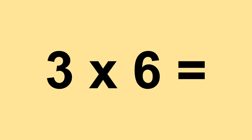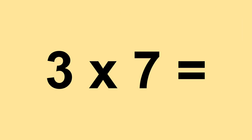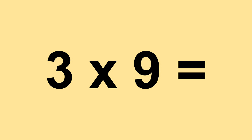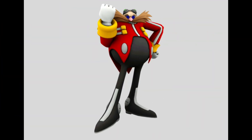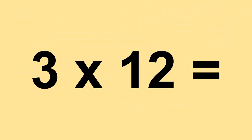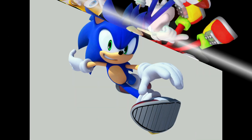Three times six equals eighteen. Three times seven equals twenty-one. Three times eight equals twenty-four. Three times nine equals twenty-seven. Three times ten equals thirty. Three times eleven equals thirty-three. Three times twelve equals thirty-six.